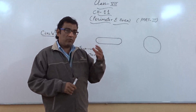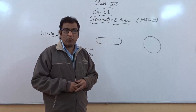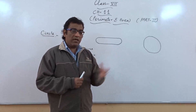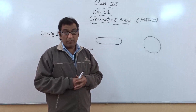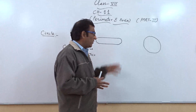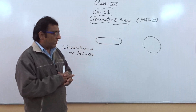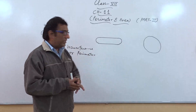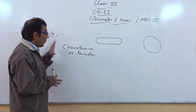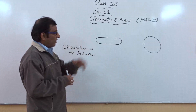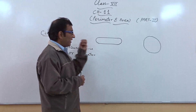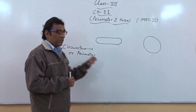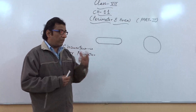In my previous video I told about the perimeter of 2D shapes — that is rectangle, squares, triangles, and parallelogram — in my first and second videos. But in this video we will focus only on the circle, and then we will do some questions related with these figures.